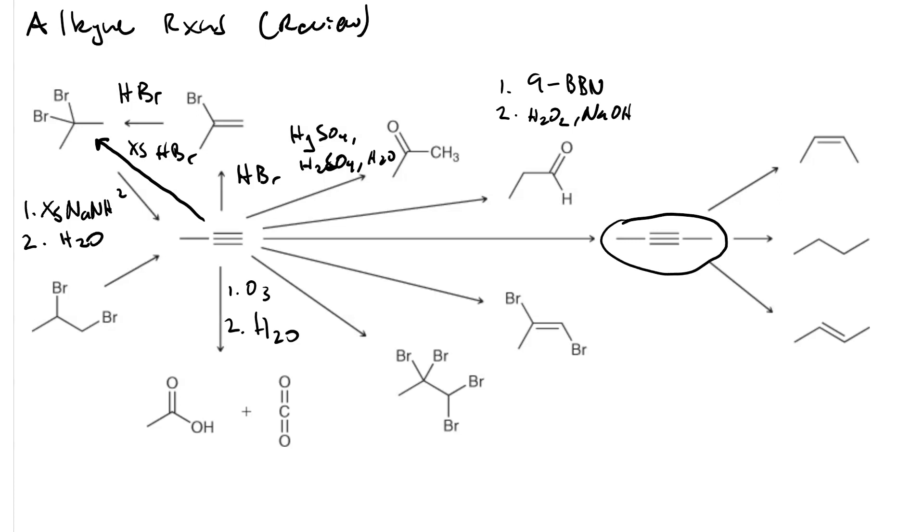To go from the terminal alkyne to this internal alkyne that has one more carbon, this is an alkylation reaction. So first, we'd react with sodium amide to deprotonate the terminal alkyne. And second, we'd use like a methyl halide, like methyl bromide.